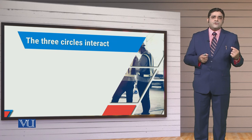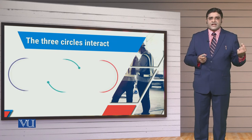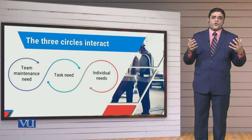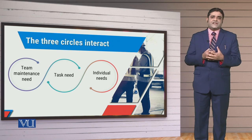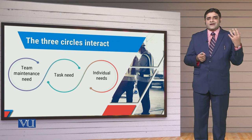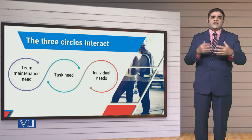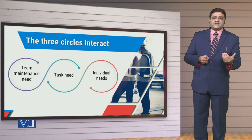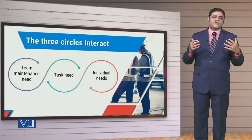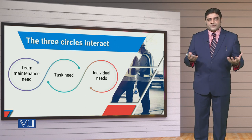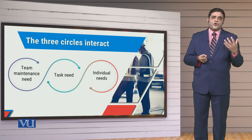Now remember that when we are talking about these different levels of needs and different perspectives, we have to try to bring these three circles, these three perspectives together. They are all interrelated and associated with one another. For example, the team maintenance need is linked with the task need, the task need is linked with the individual need, and obviously the individual need is associated with the rest. So being a leader, we need to understand this and understand the situation.